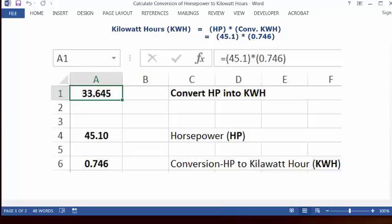And your answer, 33.645 kilowatt-hours, will appear in cell A1. So that's the answer. That's how you solve the problem.